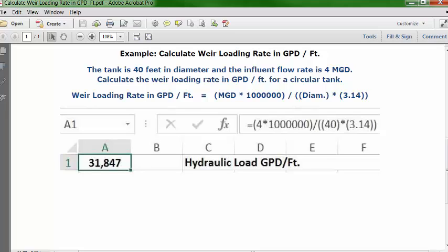Then press enter or the return key and in cell A1 you will see your answer: 31,847 gallons per day per feet as a loading rate, hydraulic loading rate based on this data.